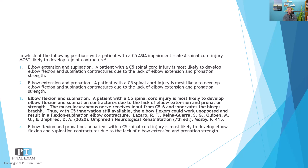So there you go. The joint contracture position for someone with a C5 spinal cord injury — they are likely to develop it in elbow flexion and supination.